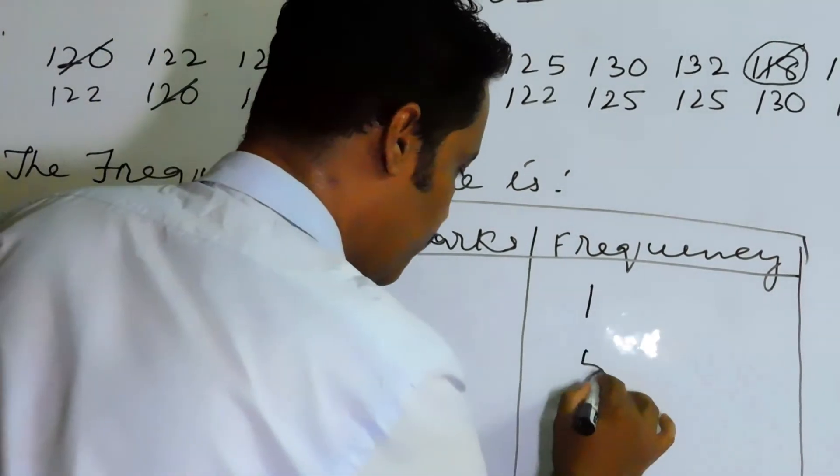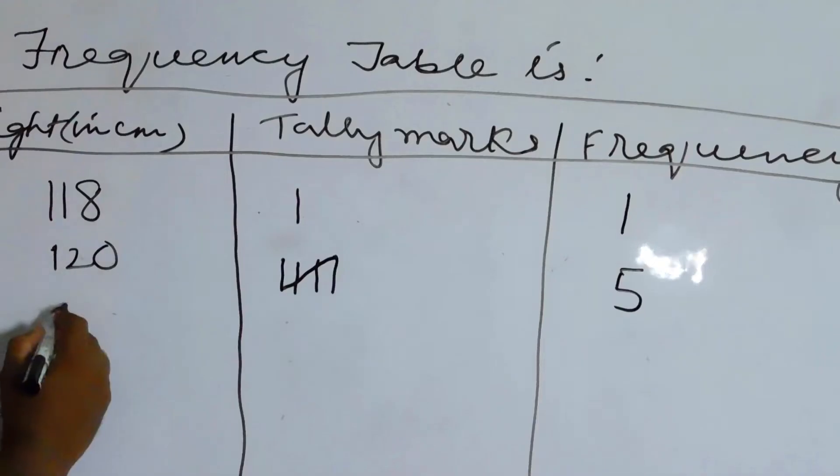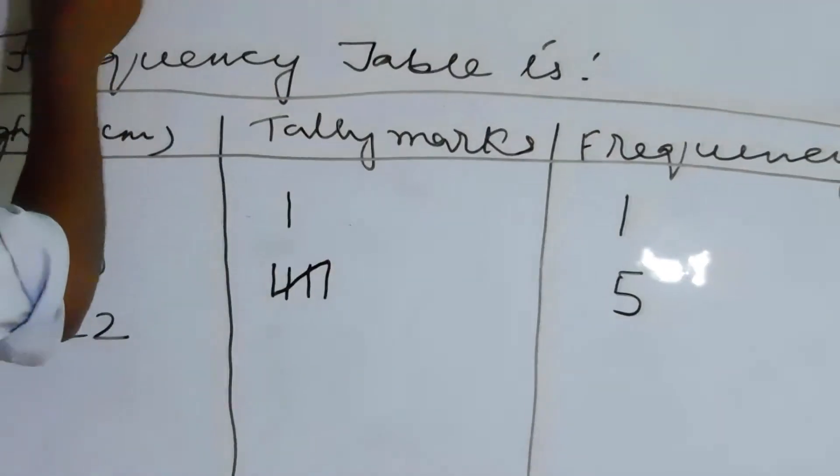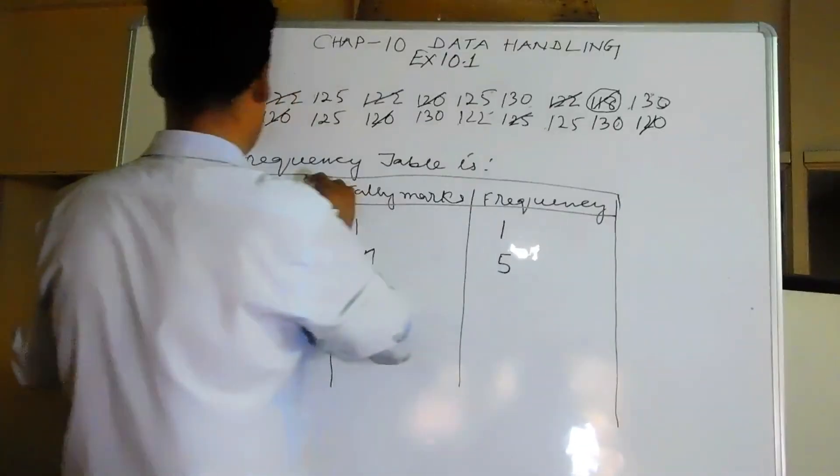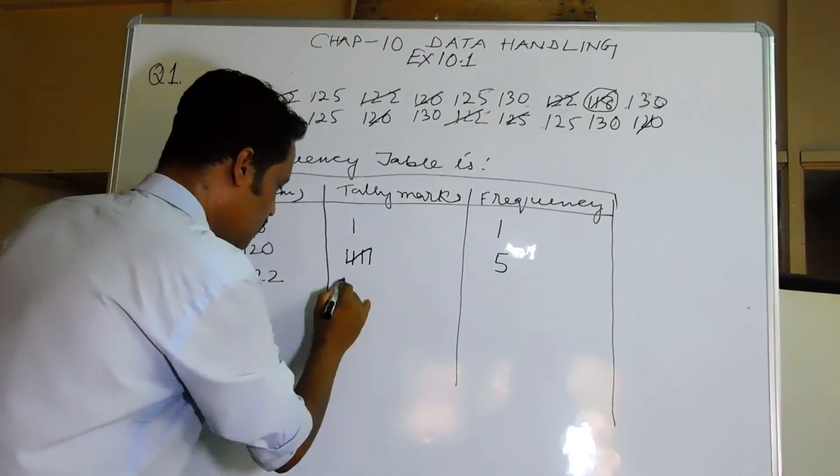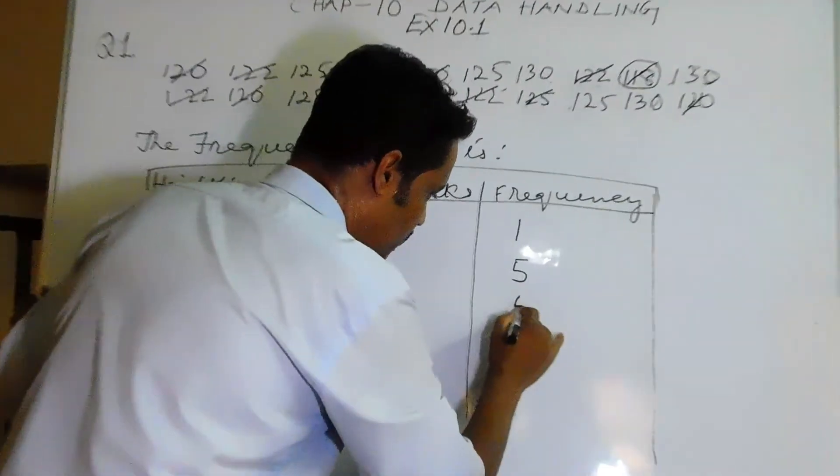Next coming to the next number I think we have 122. So 122, here one two, here one two three, four five. So one two three four five, so write five here.